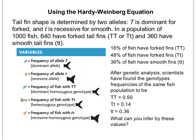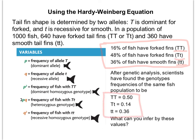We've now solved for everything: 16% homozygous dominant, 48% heterozygous, and 36% homozygous recessive. After genetic analysis, scientists found the actual genotype frequencies of the same fish population to be different values. Just like before, when values change that tells us the population is evolving. Since our calculated values and the actual values are different, we can infer that the population is evolving.